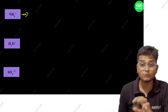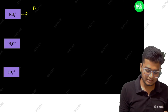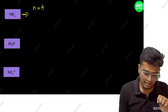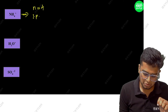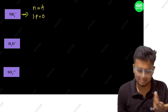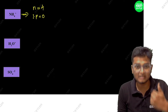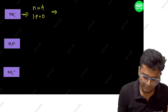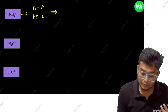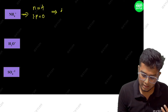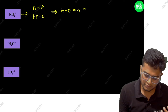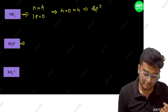Next, NH4+. Number of atoms: 4 hydrogens, so 4. Lone pairs on nitrogen in NH4+: 0. So 4 plus 0 equals 4. That gives SP3 hybridization.